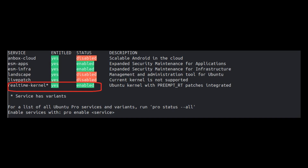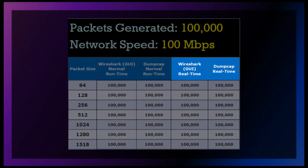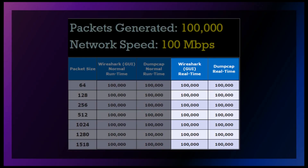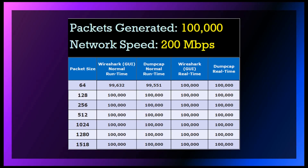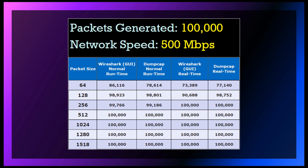We have now enabled real-time kernel in Ubuntu. Let's see how well our laptop does in capturing packets with Wireshark. With our Ubuntu kernel running in real-time, we were able to capture all 100,000 packets for network speeds of 100, 200, and 300 megabits per second. At 500 megabits, Wireshark in normal runtime for 64 and 128-byte packet sizes did slightly better than their real-time counterparts. For byte sizes of 512 to 1518, Wireshark in real-time captured all 100,000 packets.